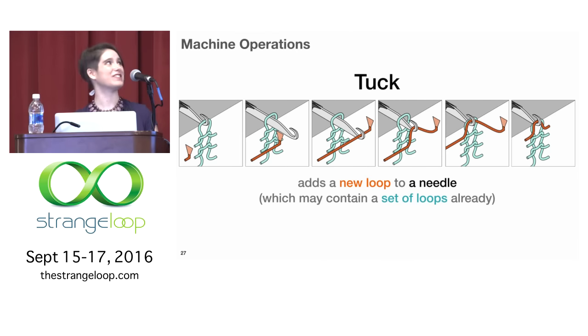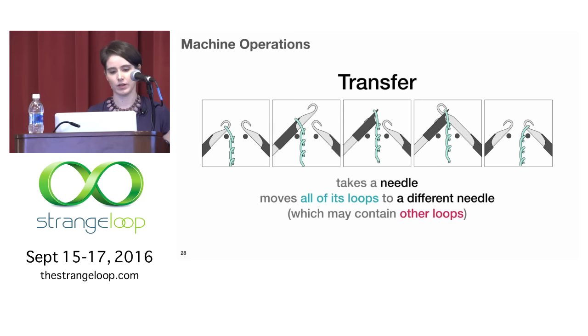All right. So we also have a tuck operation. It's similar to a knit in that it puts some new yarn into the hook. Unlike the knit, it does not drop the old one. So this is a way you could end up with more than one loop on a needle. It's one of several ways you can end up with more than one loop on a needle.